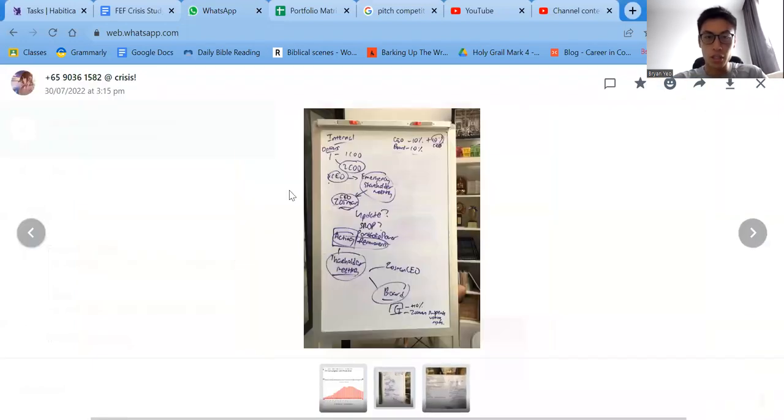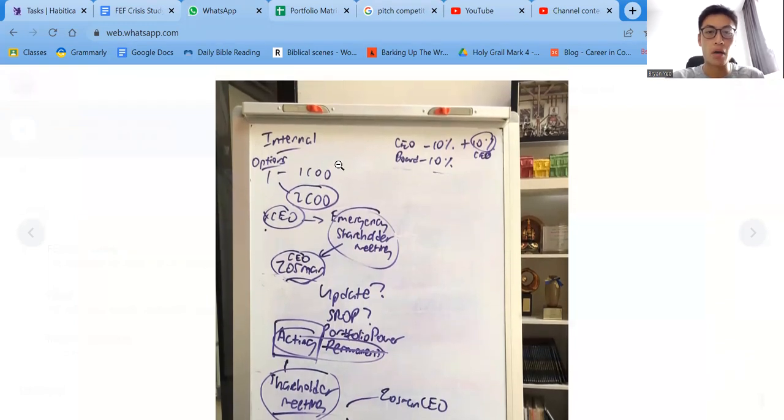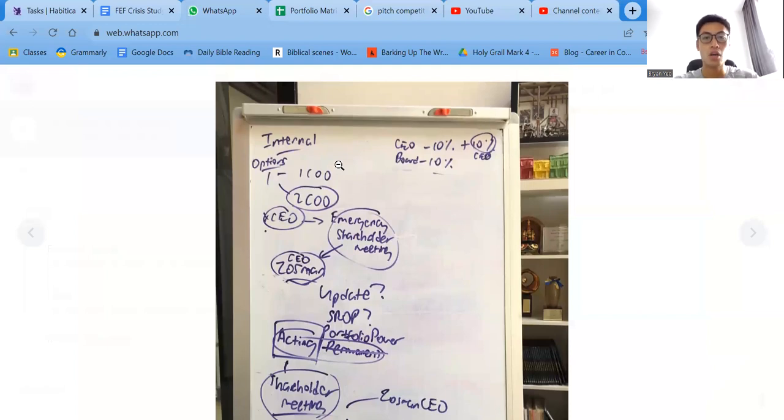I just want to share the main change with regards to the Storyline slash SROP. Originally we had one COO and then he would assume the position of power once the CEO dies. But then we realized that if he consolidates that much power and he gets it for free, it's just an unfair advantage for him.